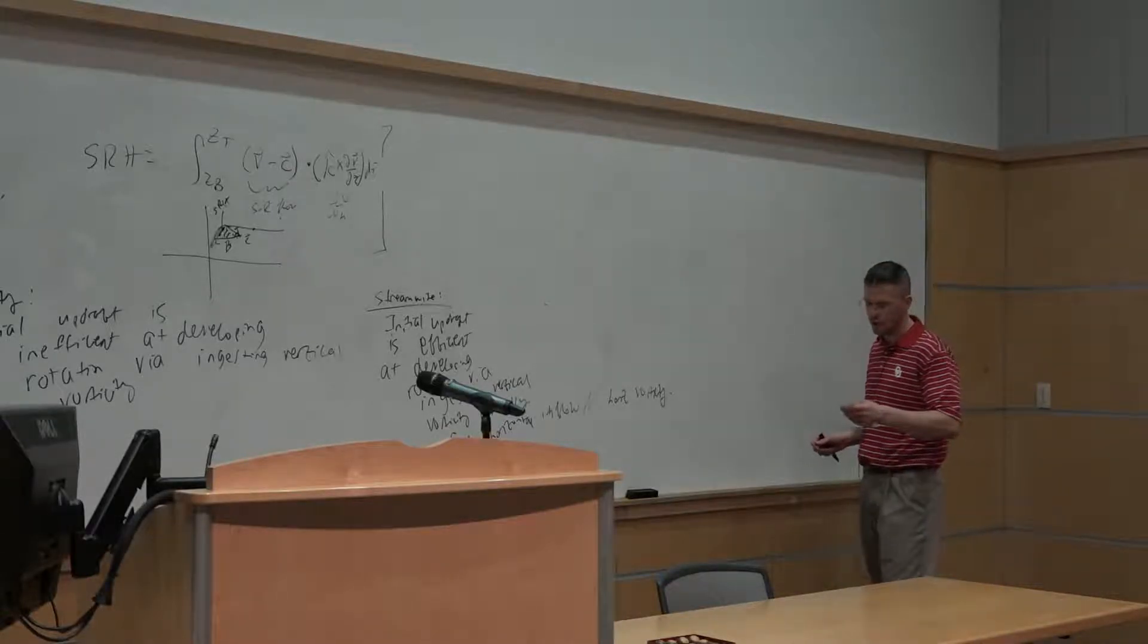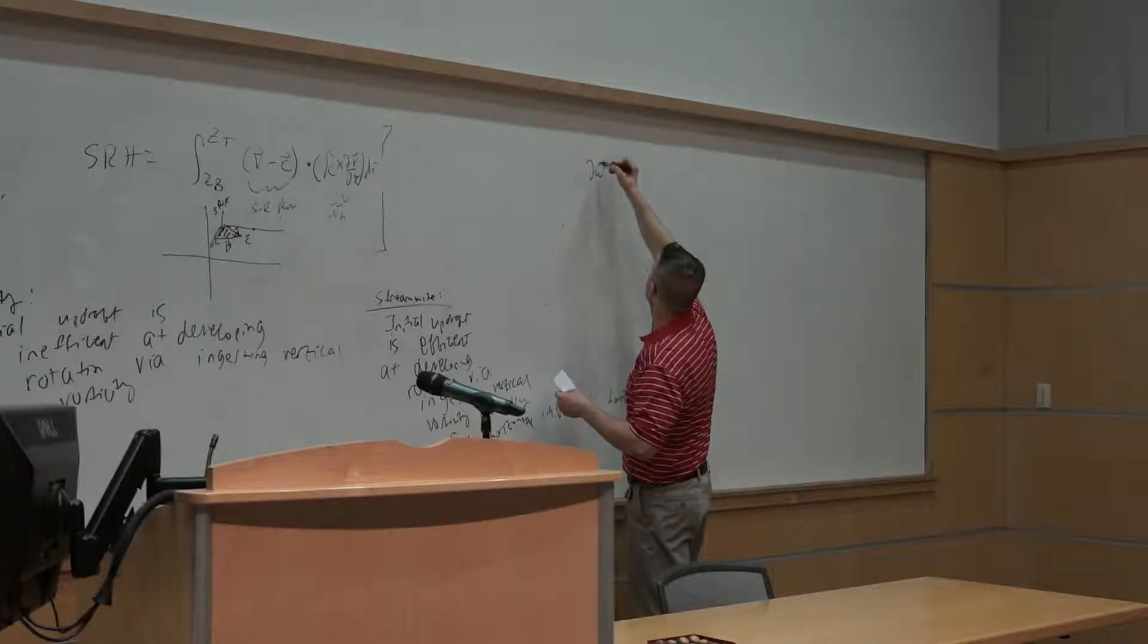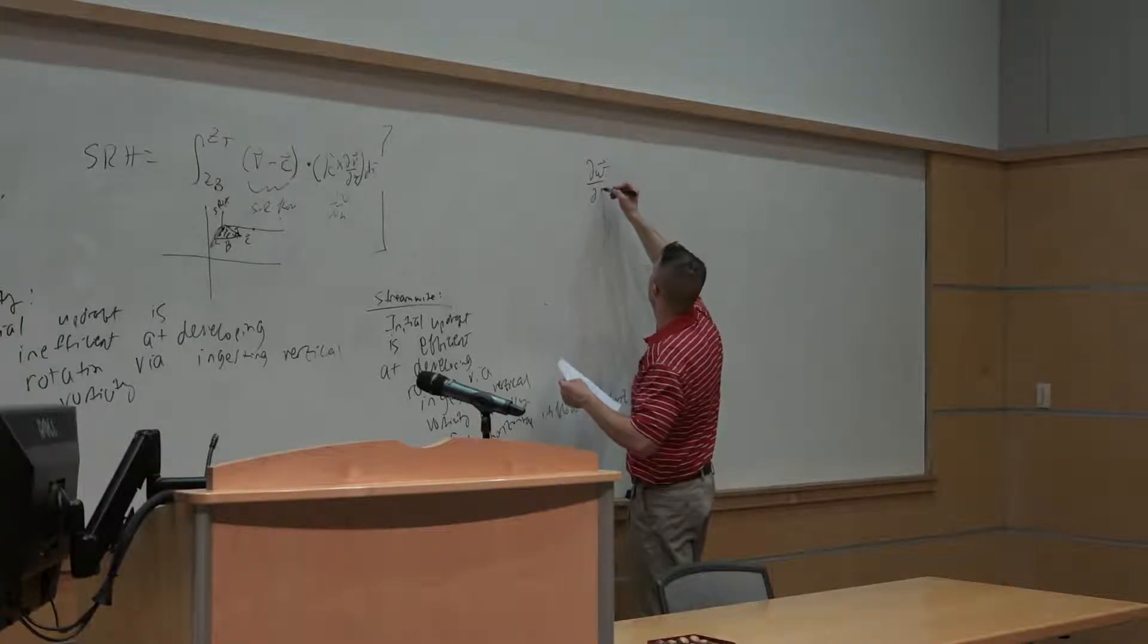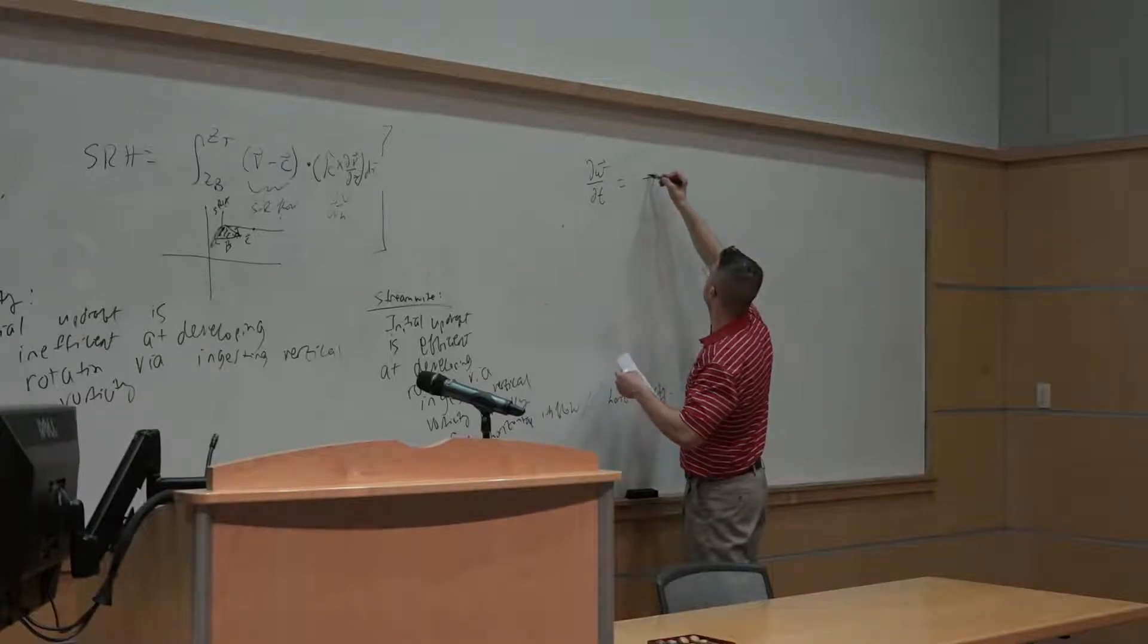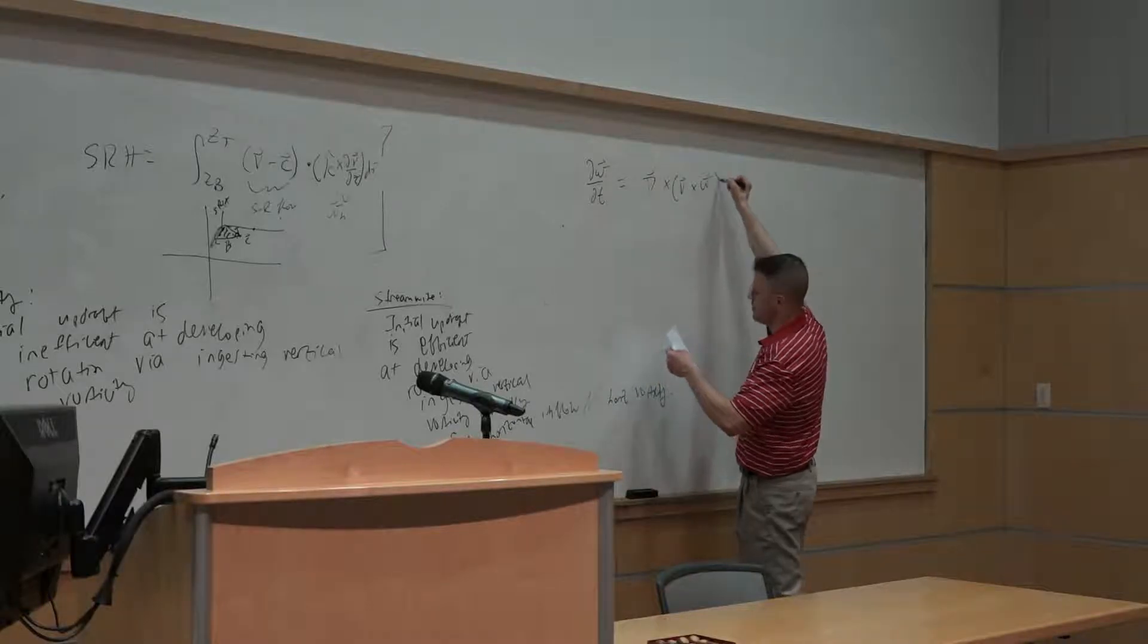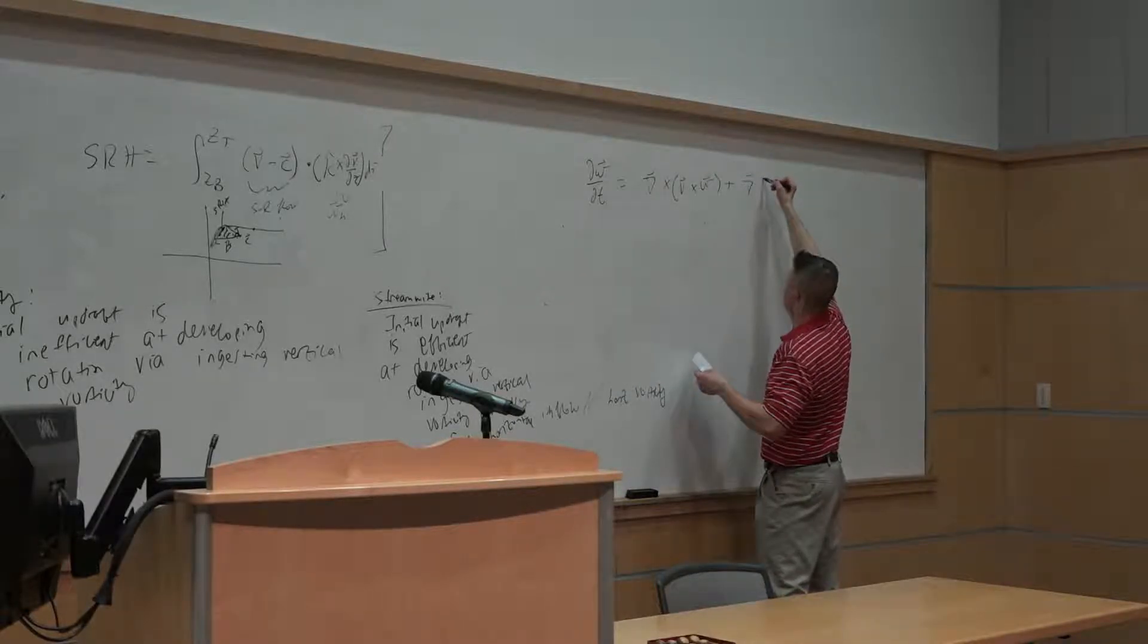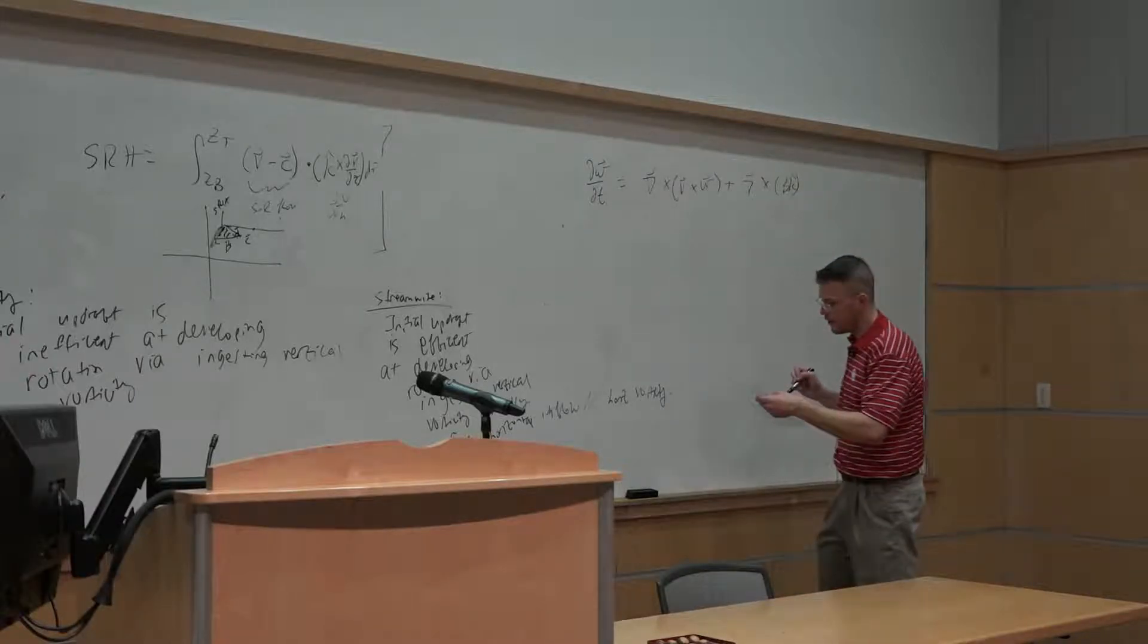What you'll see in examination number two is that we can express the tendency of the vorticity vector as the sum of two terms: del cross v cross omega plus del cross vk over here.